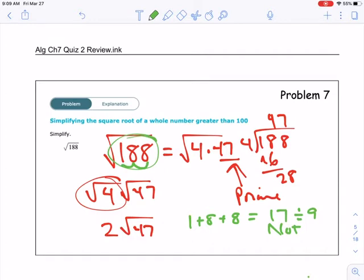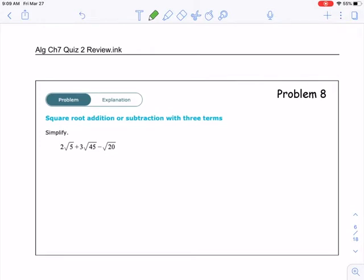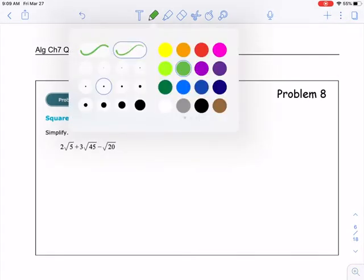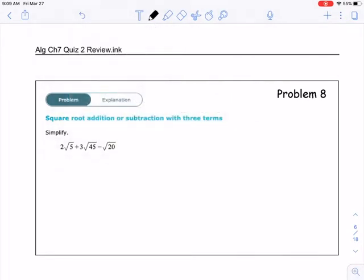Okay, moving on. Square root addition or subtraction with 3 terms. Alright, we like these. So with these, pretty much what you're going to try to do is get the radical, the radicand, the same on all of these.